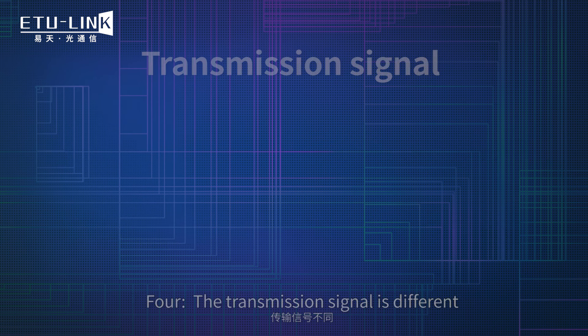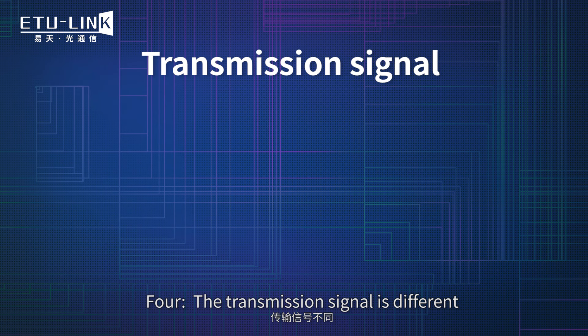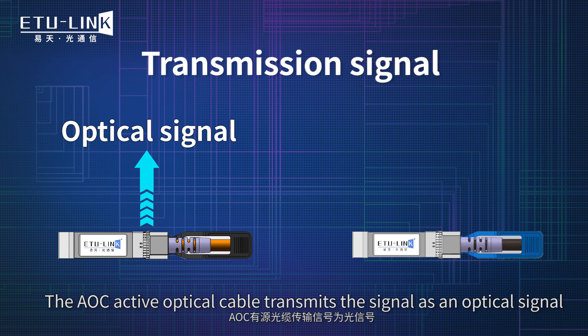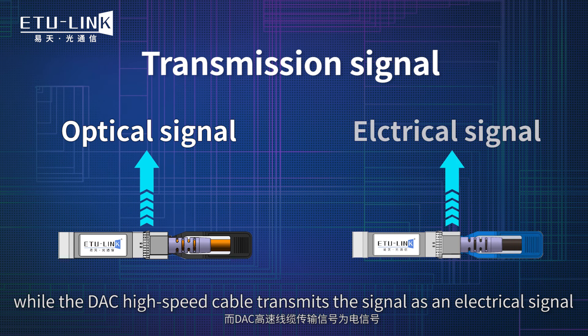Four: the transmission signal is different. The AOC active optical cable transmits the signal as an optical signal, while the DAC high-speed cable transmits the signal as an electrical signal.